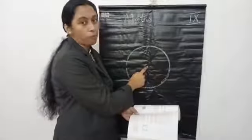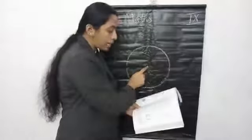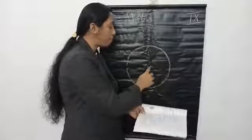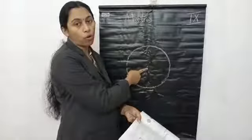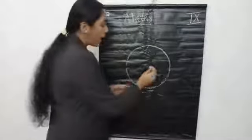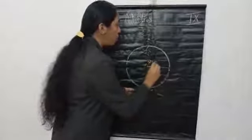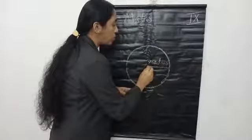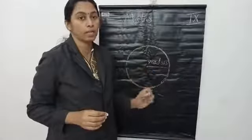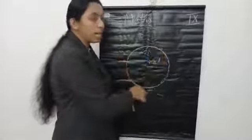This is the fixed point and the fixed distance is this distance. So from a fixed distance from a fixed point in the plane is called a circle. So here is the fixed point — it is called the center of the circle. And the fixed distance, this distance, is known as radius. This fixed distance is the radius and the fixed point is called the center of the circle.